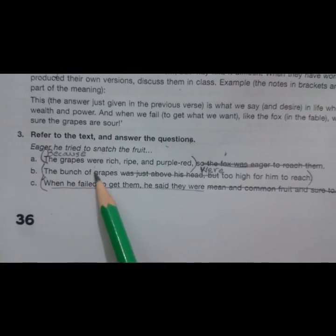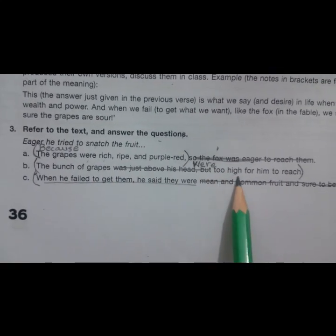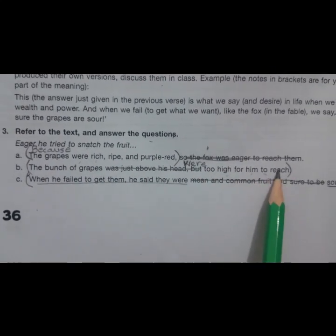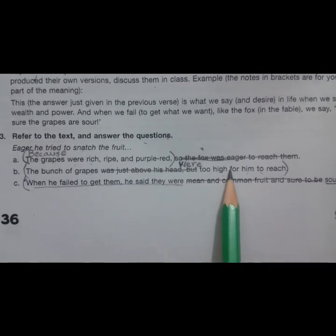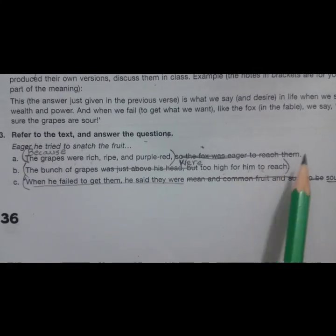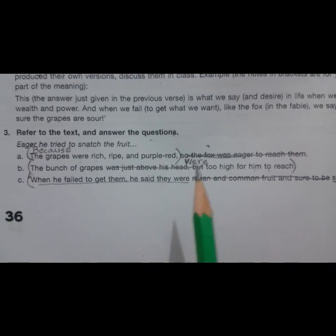The answer is that the bunch of grapes were too high for him to reach it. So that's why the bunch of grapes were too high. They were too high for him to reach it. That's why he kept on jumping and in the end he did not catch them.